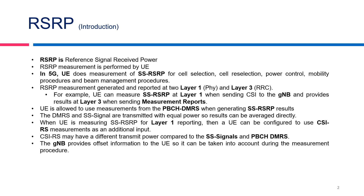RSRP is reference signal received power. RSRP measurement is done by the UE. In 5G, the UE does the measurement of SS-RSRP for cell selection, cell reselection, power control, mobility, and beam management procedures.